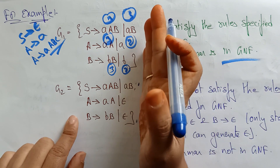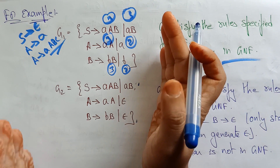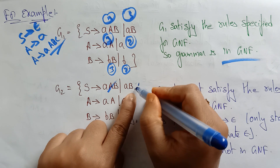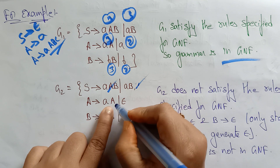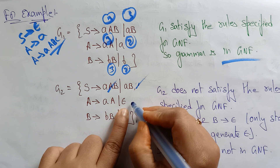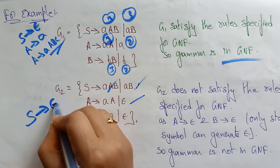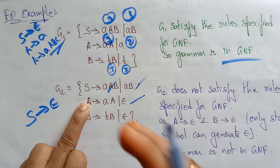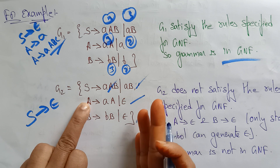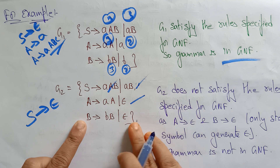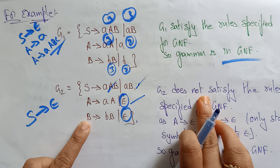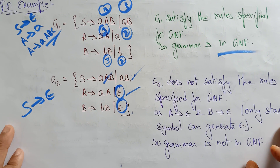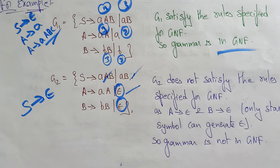Now checking grammar G2. I can clearly say this grammar is not in GNF. Some productions follow the rules — a terminal followed by non-terminals is fine. However, here A → epsilon and B → epsilon appear. Only the start symbol is allowed to generate epsilon, not other non-terminals. Since S is the start symbol and it is not generating epsilon — instead A and B are generating epsilon — G2 does not satisfy the rules of Greibach Normal Form. Therefore, the grammar G2 is not in GNF.